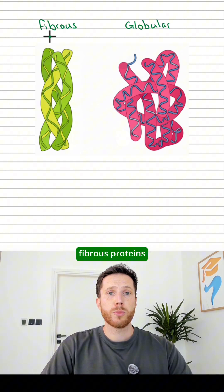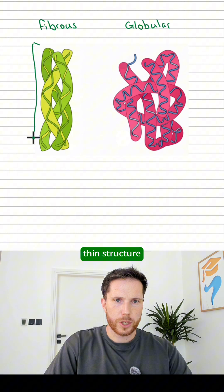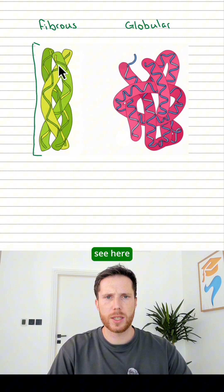So we'll start out with the fibrous proteins. Now fibrous proteins tend to have this long, thin structure, like we can see here. And the structure is very repetitive, like we can see here as well.